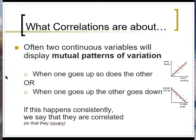It turns out that in nature, it's very common for different variables to display what we call mutual patterns of variation. This means they are varying similarly — for example, when one goes up, so does the other. Height and weight would be an example of that positive relationship. It's also possible that when variation in one variable increases, the other variable decreases, and that would be a negative relationship.